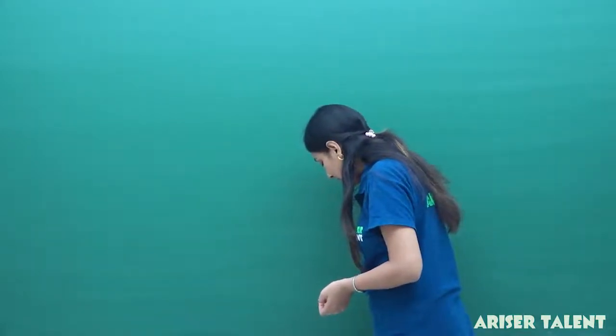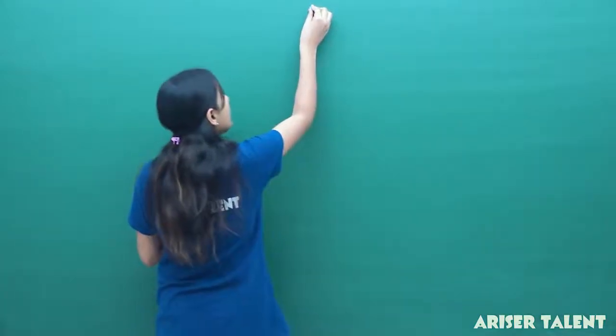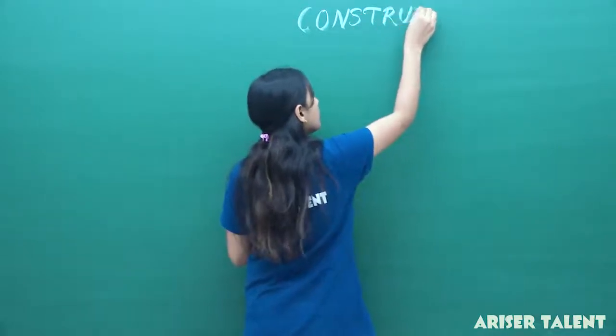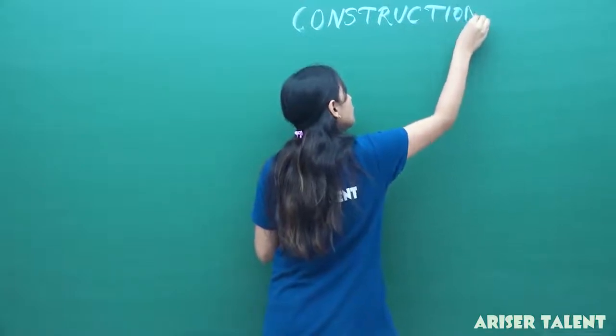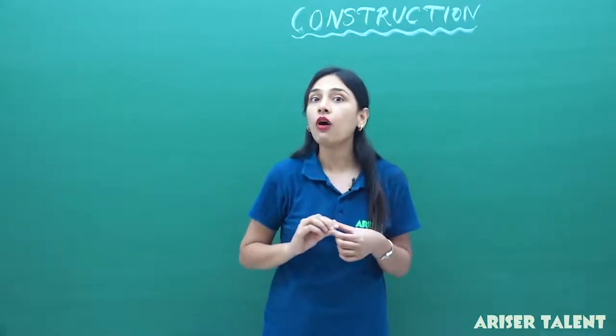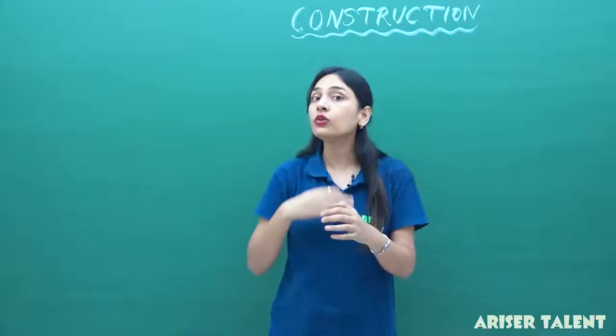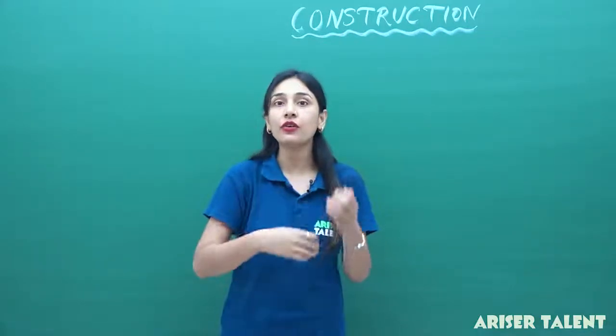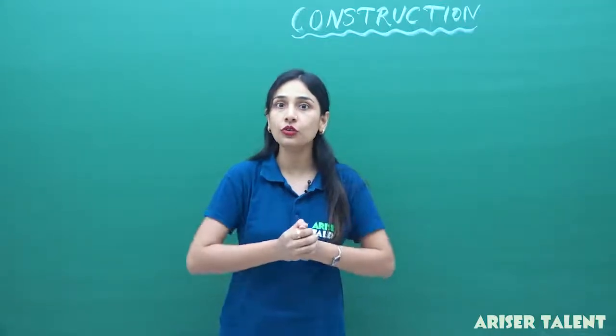In your 10th standard, you are having a chapter named Construction. I have taught you triangles and I have taught you circles. You have already learned how to construct lines, how to bisect them, how to bisect an angle in your previous class, that is class 9. But don't worry — we are going to have a quick revision of what we have done in our previous standard. So, I am going to introduce you to construction.